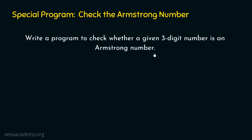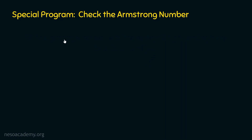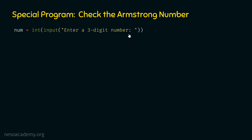First, we need to take the user input — a three-digit number from the user. The statement is: num = int(input("Enter a three-digit number: ")). We use the input method to prompt the user, then pass the result to int() to convert the string representation to an integer, and finally make num point to that integer value.